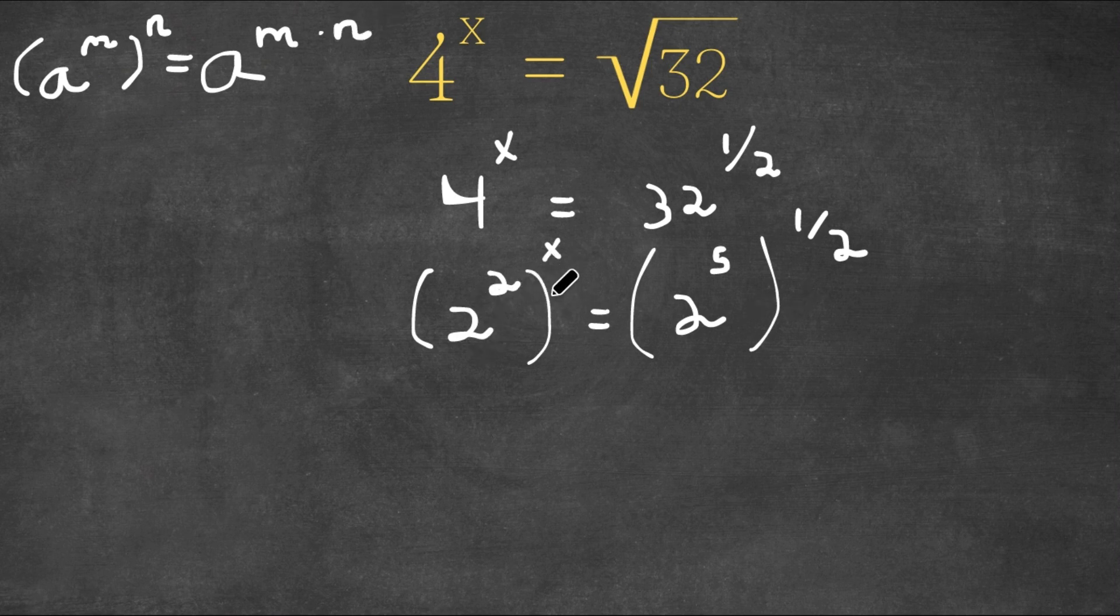So 2 to the power of 2 to the power of x, well, this would equal 2 to the power of 2 times x, which is simply just 2x.